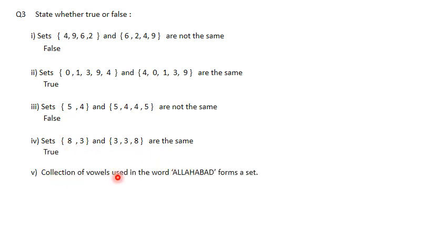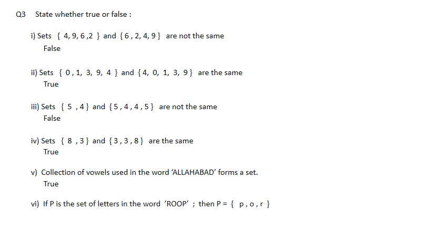Collection of vowels used in the word 'Allahabad' - does it form a set? The vowel present is only A, so the set contains only one element: {a}. The answer is true. Next: If P is the set of letters in the word ROOP (R, O, O, P), then P = {r, o, p}. Since O is repeated, we write it only once. The answer is true.